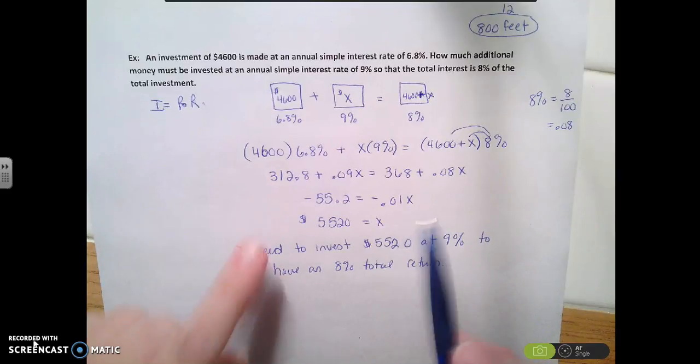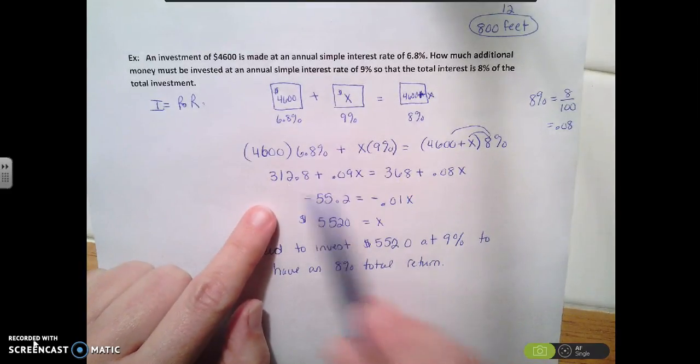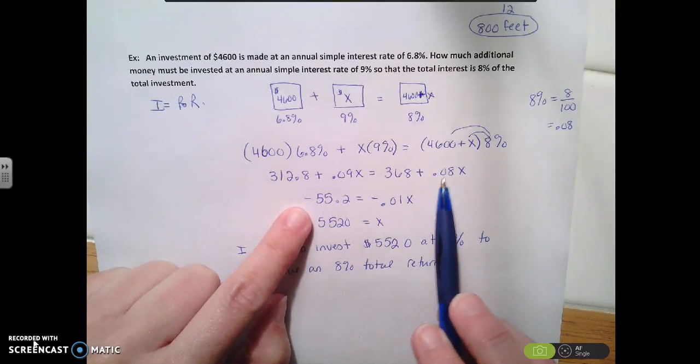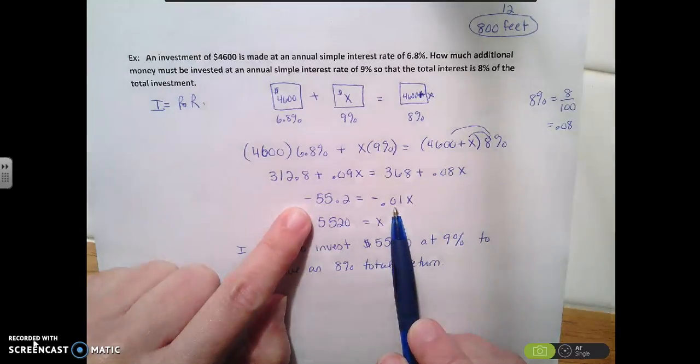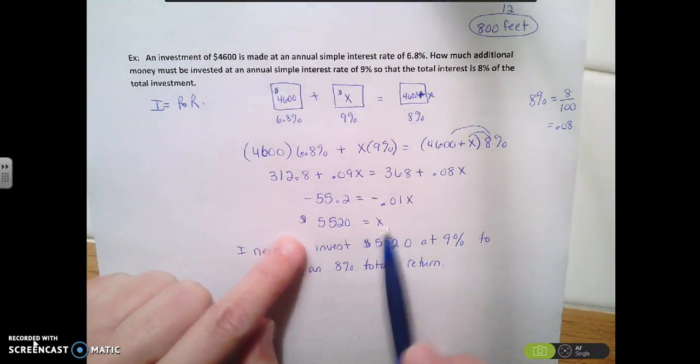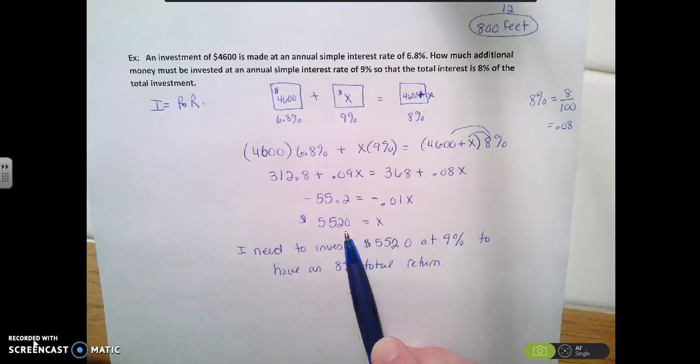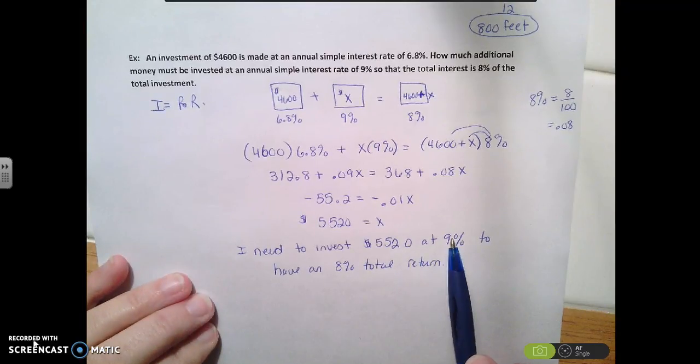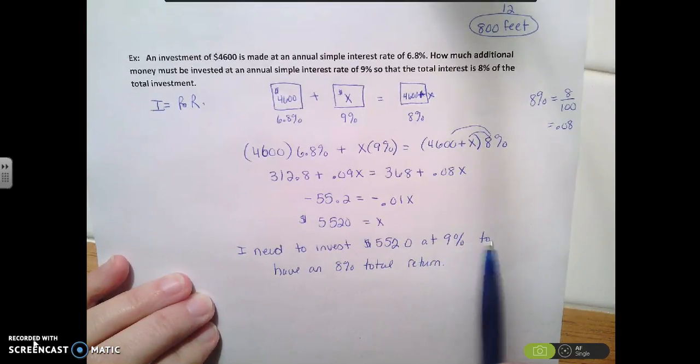And now I just have to combine like terms. So I moved the 368 over here and got negative 55.2. I moved the 0.9 over here, and I got negative 0.01X. And then divide both sides, and I get 55.20. So what that means is I need to invest $5,520 at 9% in order for all of my money to be ending up with an 8% return in the end.